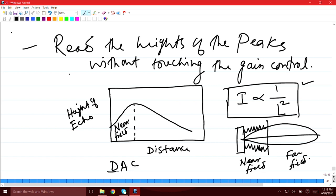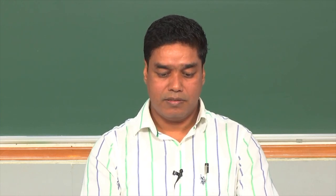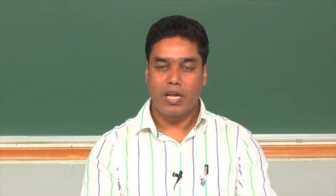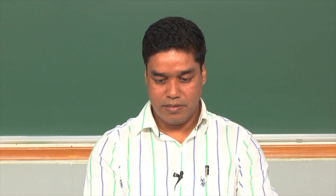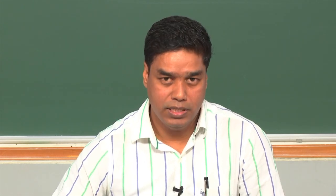That is exactly what you see in the distance amplitude curve — the increasing region corresponds to the near field. The other region is the far field, where there are no such fluctuations and signal intensity decreases as distance increases following the inverse-square relationship. That is why the DAC (distance amplitude correction) curve first increases then decreases as a function of distance.